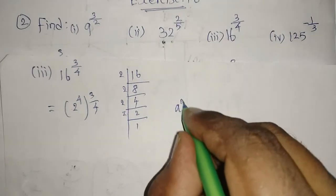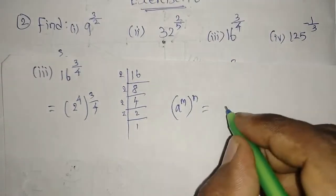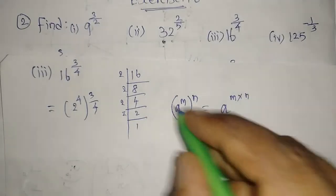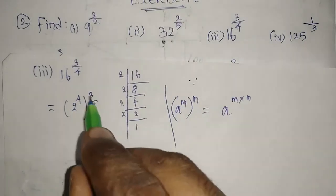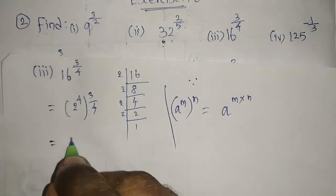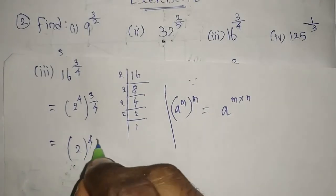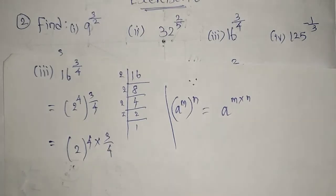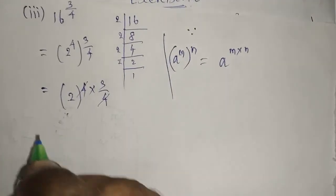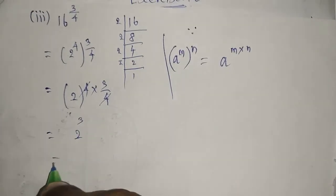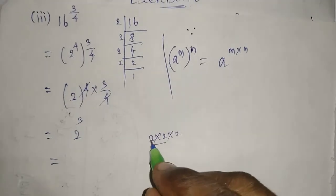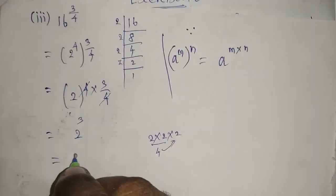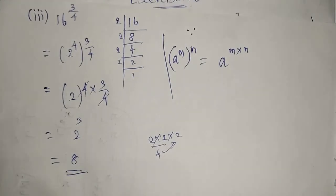This is in the form of a power m whole power n equals a power m into n. Here m is 4 and n is 3 by 4. So I get 2 whole power 4 multiplied by 3 divided by 4. The 4 and 4 cancel, leaving 2 power 3. 2 power 3 means 2 three times: 2 twos are 4, and 4 twos are 8. So 8 is the required answer for the third question.